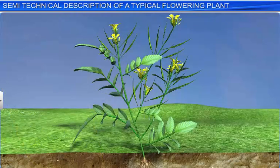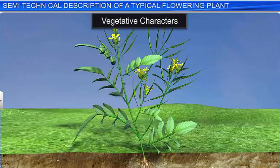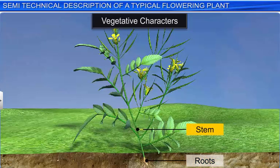The description starts with the vegetative characters of the plant, such as the type of roots, stem and leaves.